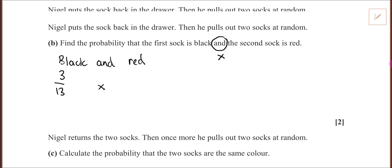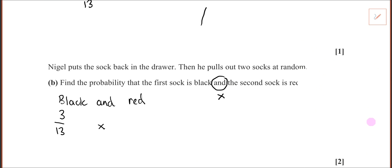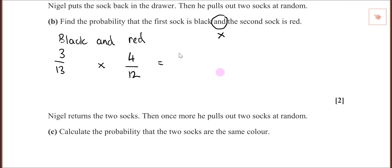For the red sock — he did put the sock back from before, so that's not impacting. But the probability of getting a red sock is four from twelve, because there's one less sock in the drawer. So we have one less sock, making it twelve.